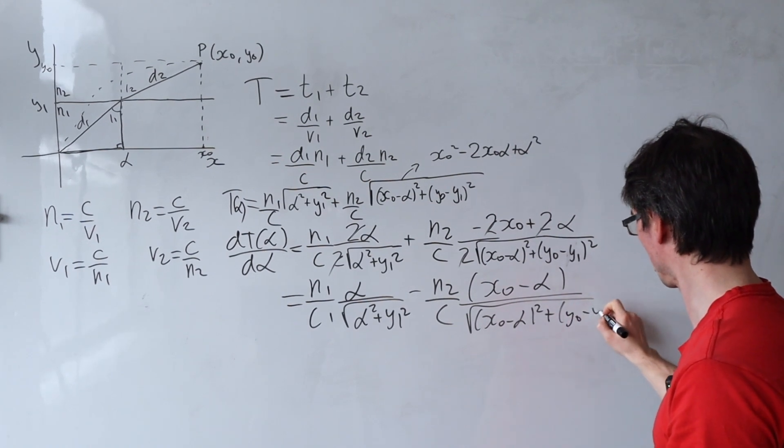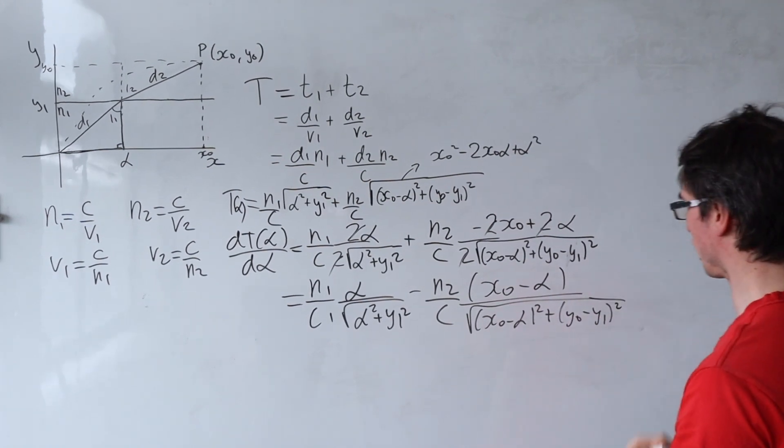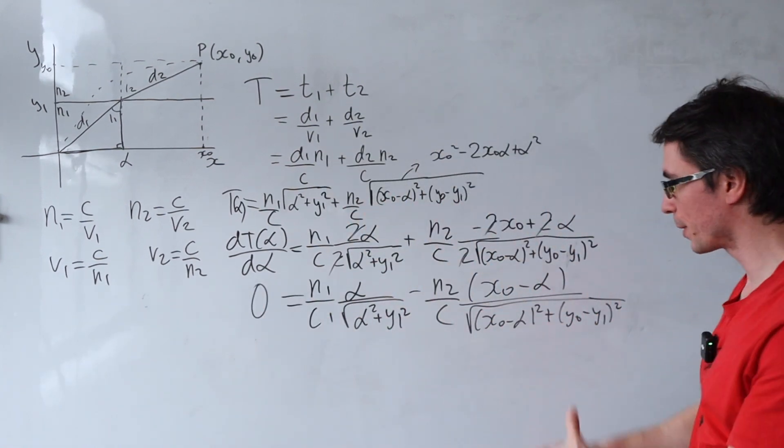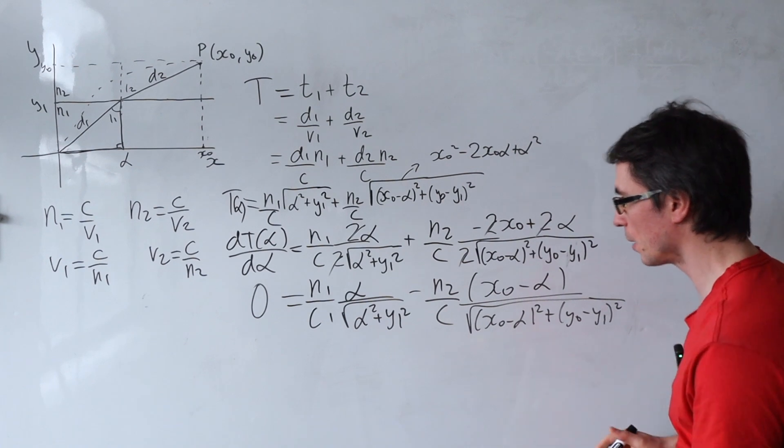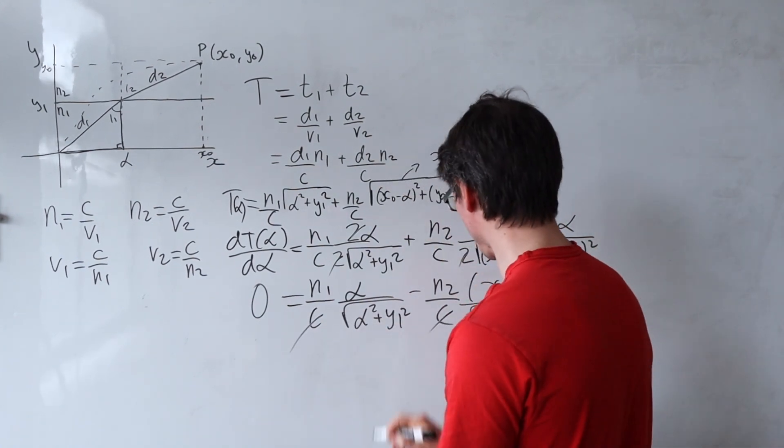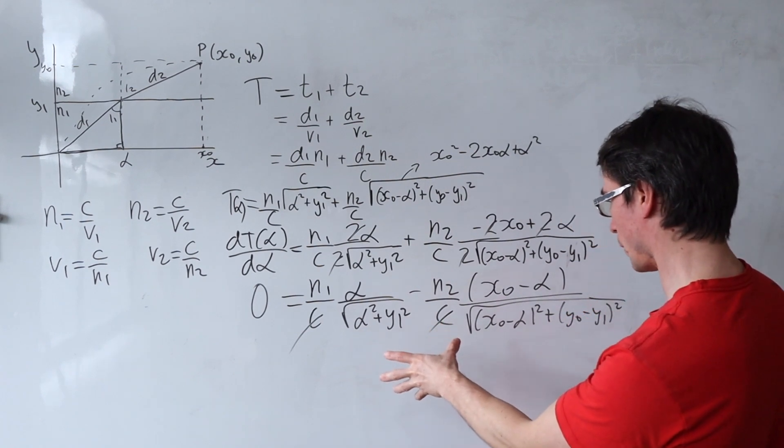And let's set this derivative to be equal to 0 because now we can do some more cancelling out. This one shouldn't be here because we can cancel out the speed of light from both sides.